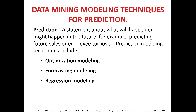Prediction is a statement about what will happen or might happen in the future — for example, predicting future sales or employee turnover. Prediction model techniques include the optimization model: a statistical process that finds the way to make a design, system or decision as effective as possible. For example, finding the values of controllable variables that determine maximal productivity or minimal waste.